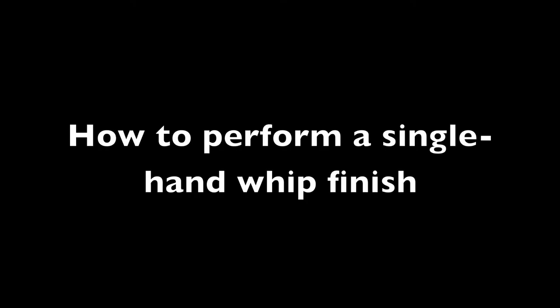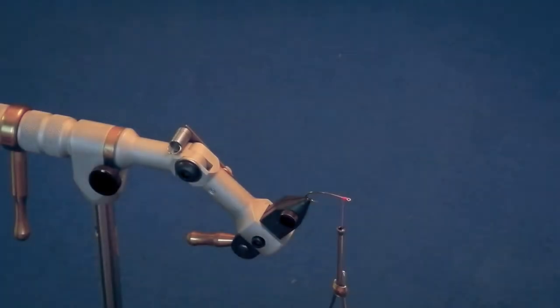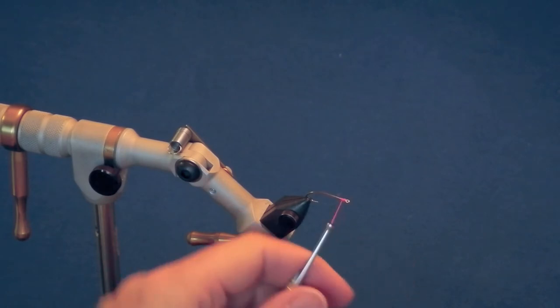To perform a single-hand whip finish, hold the bobbin holder with your left hand and pull a short length of thread straight up above the hook shank.